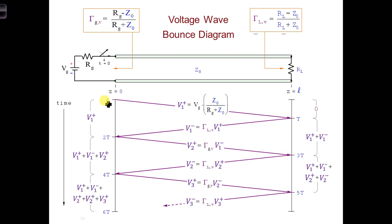Here's a nicer way to look at it. Over this time period, we would see V1+ at the generator side. Between 2T and 4T, we would see V1+, V1-, and V2+, and so forth.